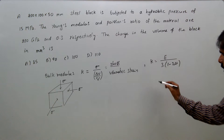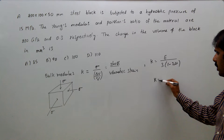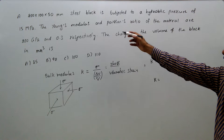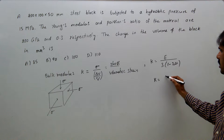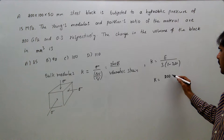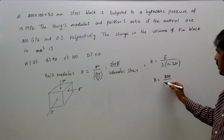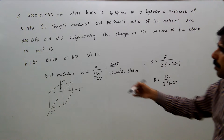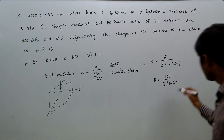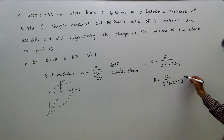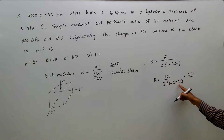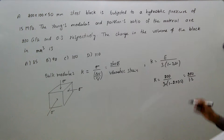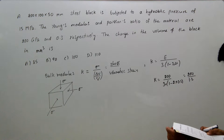From the relation, K equals E divided by 3(1 minus 2μ). E is given as 200 gigapascals, and Poisson's ratio μ is 0.3. So K equals 200 divided by 3 into (1 minus 2 × 0.3), which is 200 divided by 3 × 0.4, giving 200 divided by 1.2 gigapascals.